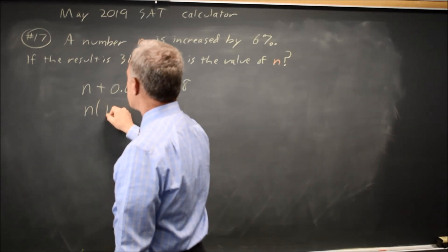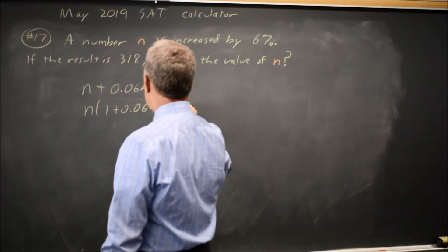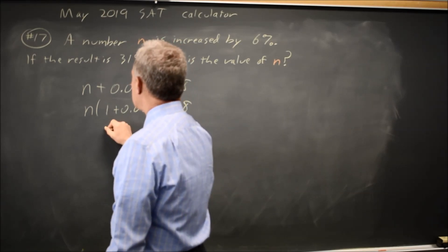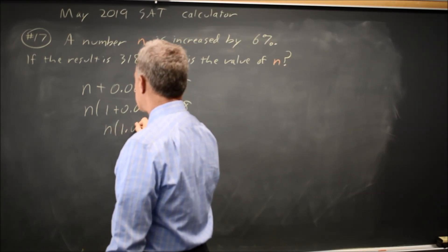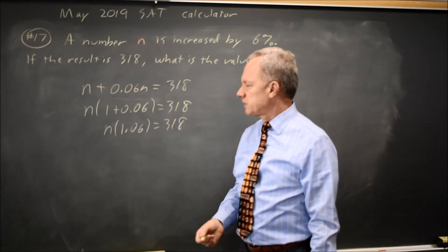If you factor out an n, you get n times 1 plus .06 equals 318, or n times 1.06 equals 318, which many of you will have written in the first step.